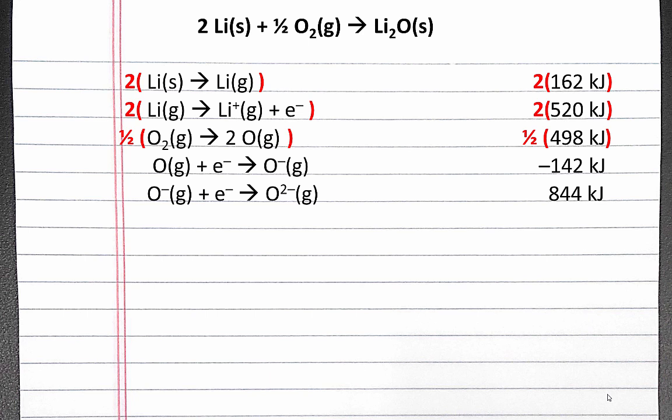Now we have two gaseous lithium cations and a gaseous oxygen anion, and these gaseous cations and anion will combine together to produce our lithium oxide solid. The energy released during this process is our lattice energy.